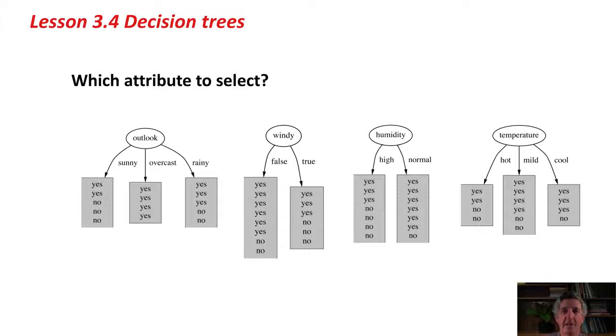What we're really looking for is a pure split, a split into pure nodes. We would be delighted if we find an attribute that splits exactly into one node where they're all yeses, and another node where they're all noes, and perhaps a third node where they're all yeses again. That would be the best thing. What we don't want is mixtures, because when we get mixtures of yeses and noes at a node, then we've got to split again.